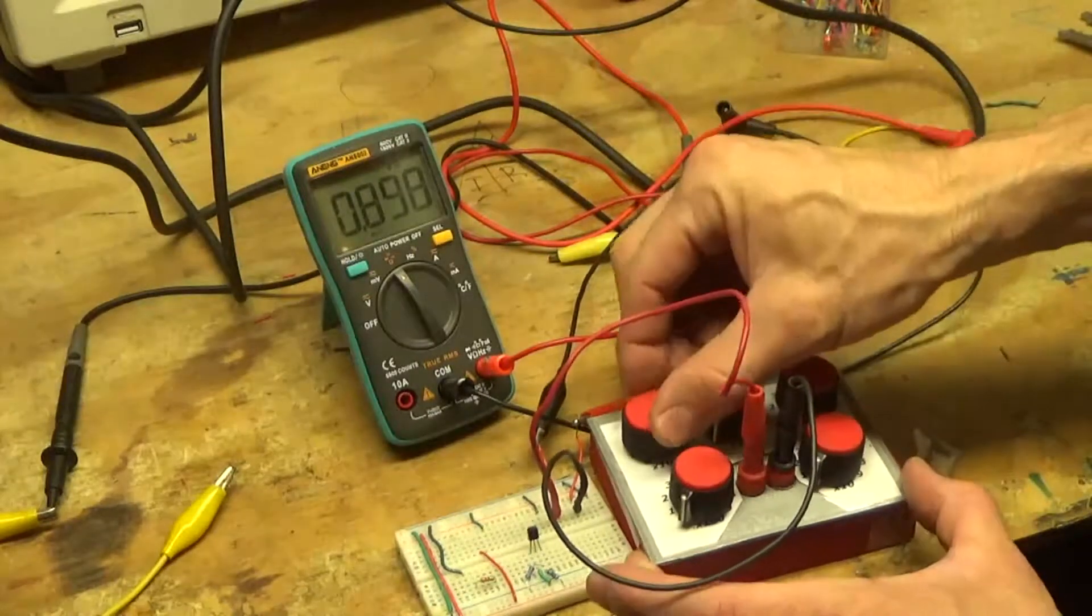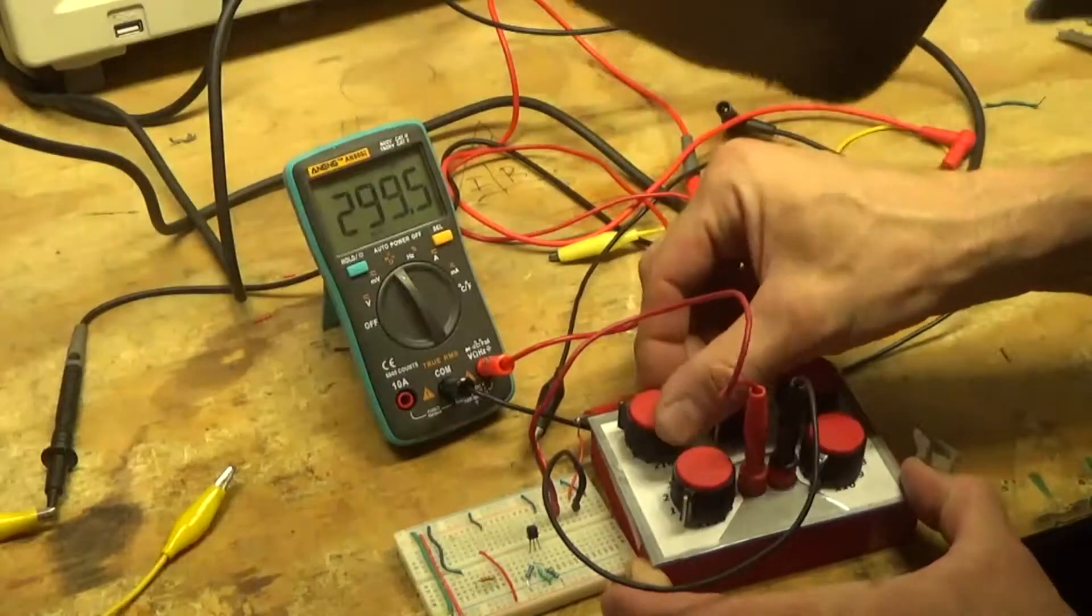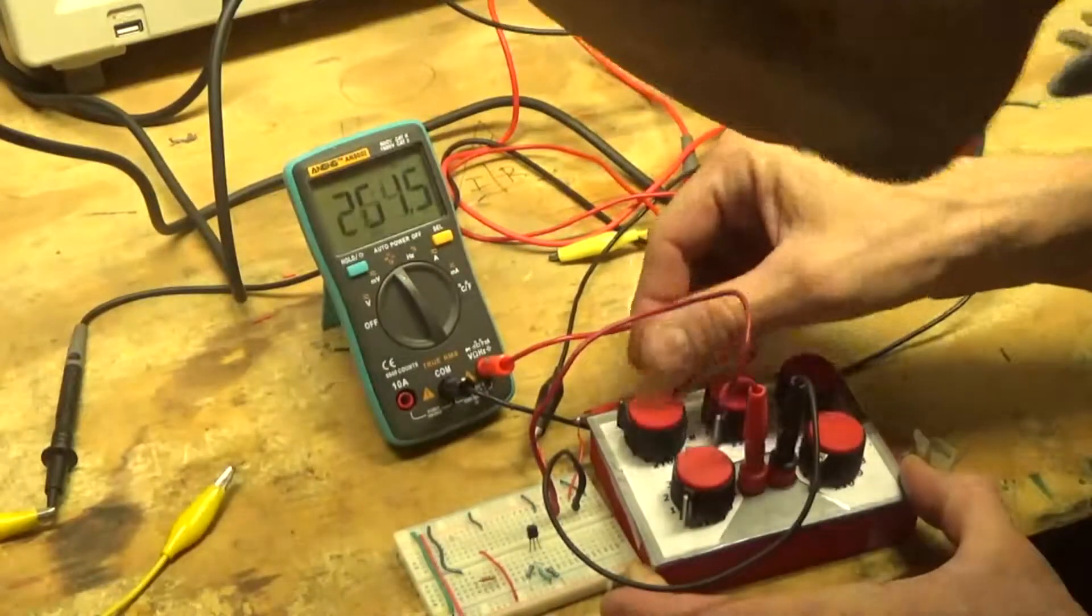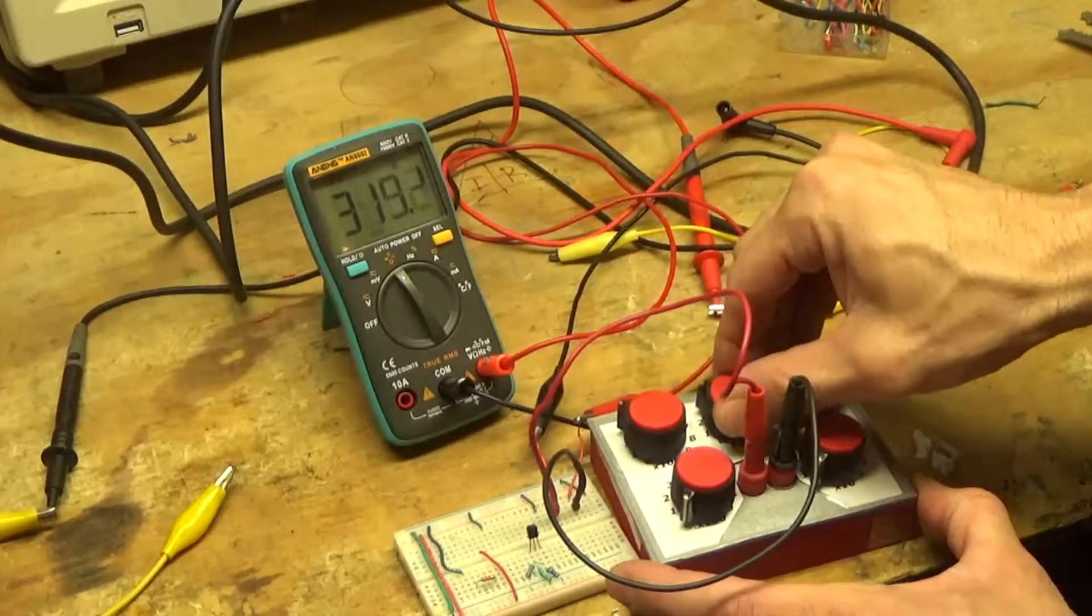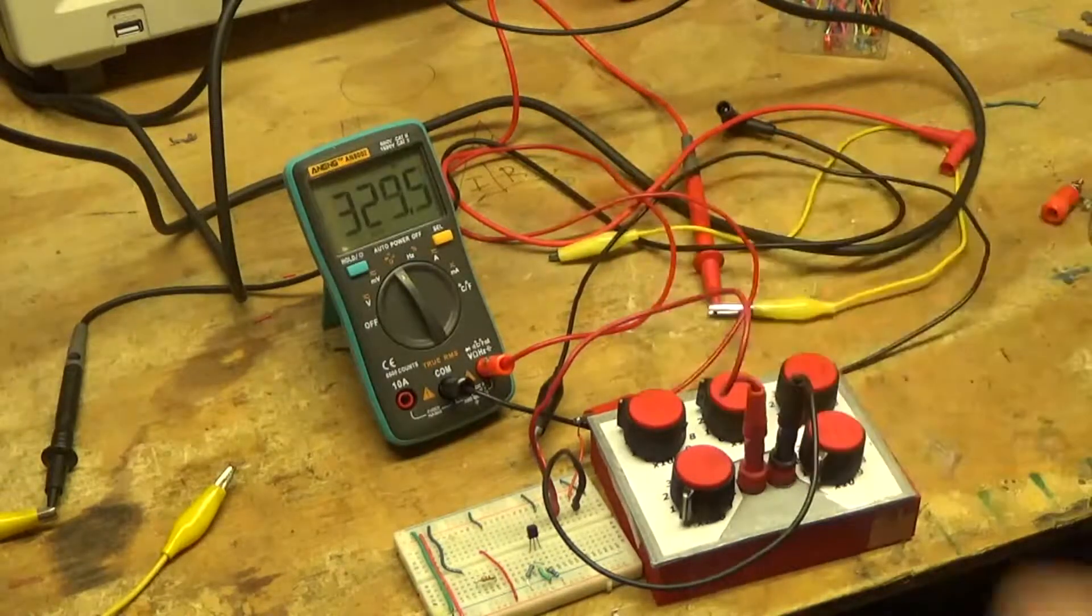So let's say I wanted 330k. Let's see here. It's 310, 20, 30. This is 330k.